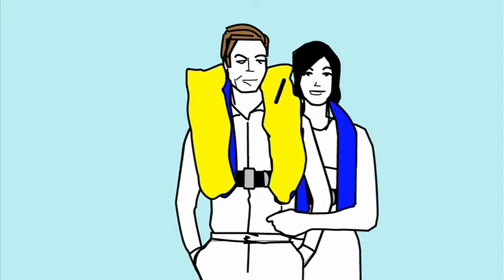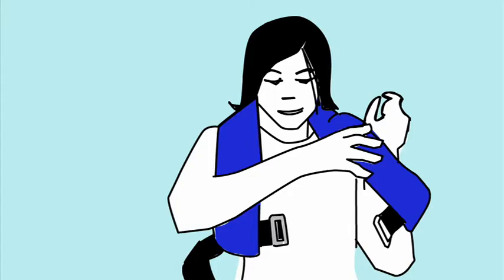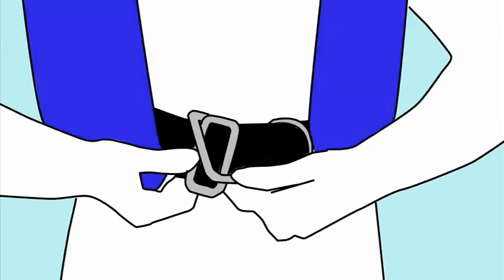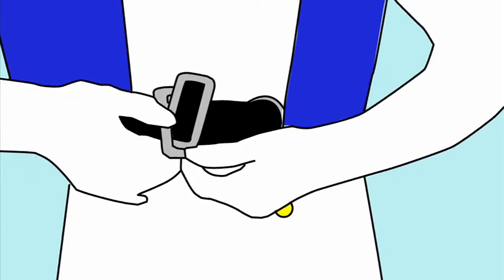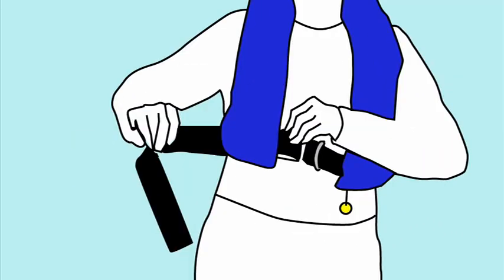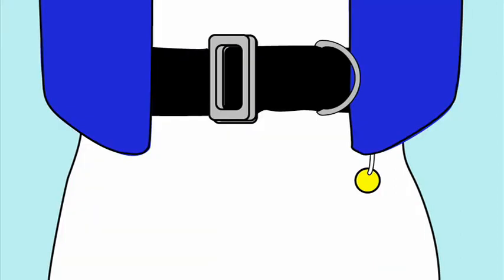Life jackets should be worn at all times on board. With an integral harness, they fasten by buckle or clip at the front, and a crutch strap. They should be adjusted to fit snugly before setting sail. Jackets inflate automatically in water, but can also be inflated manually by pulling on the toggle. Air can be topped up by blowing into the inflation tube.